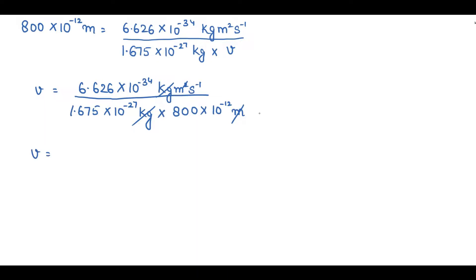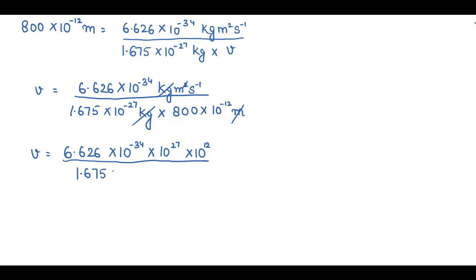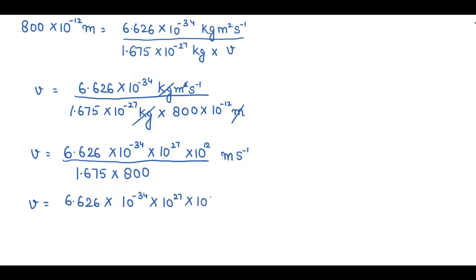Compiling the powers of 10: 10⁻³⁴ in the numerator, and 10⁻²⁷ × 10⁻¹² in the denominator. Moving denominator powers to numerator changes their signs: 10⁻³⁴ × 10²⁷ × 10¹². The numerical denominator is 1.675 × 800 = 1340. To simplify, we rewrite 6.626 as 6626 × 10⁻³, giving numerator coefficient 6626.